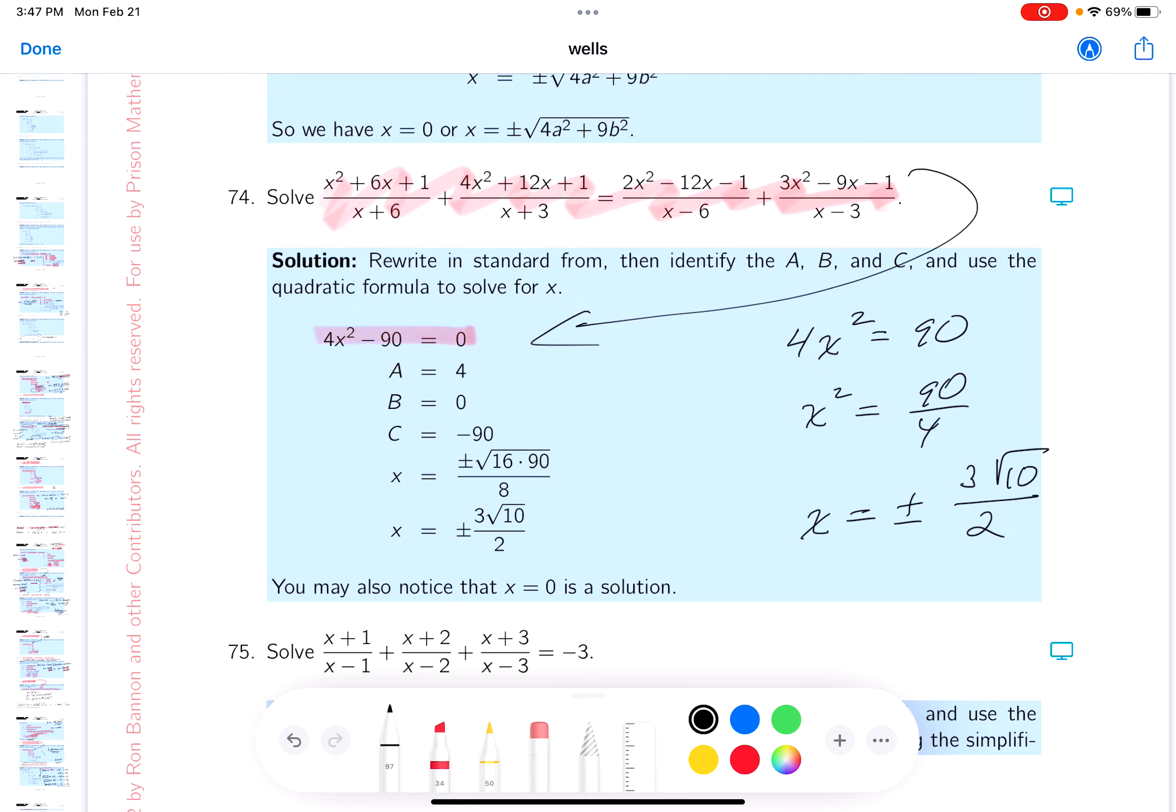All right, now someone says are they problematic numbers? Not at all. The only numbers that would be problematic for me would be -6, -3, 6, and 3, and that's not that number, so I'm pretty good with that. However, they go on to mention there is another solution to the problem.